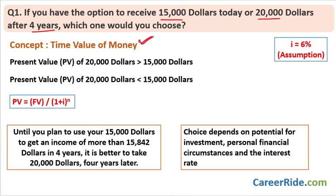What is going to happen to this particular amount four years, five years, or ten years down the line? Based on those calculations you decide whether you want the money today or after some years. If the present value of $20,000 is more than $15,000, it makes more sense to receive the money four years from now. But if the present value of $20,000 is less than $15,000, the value of money will be less, and in that case it makes more sense to receive the money today.